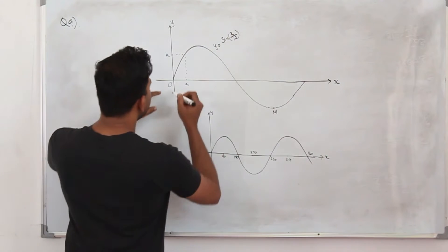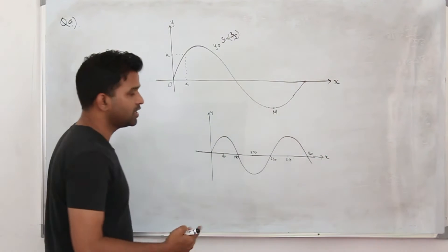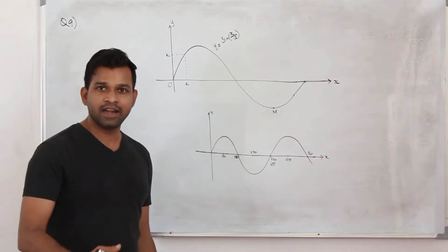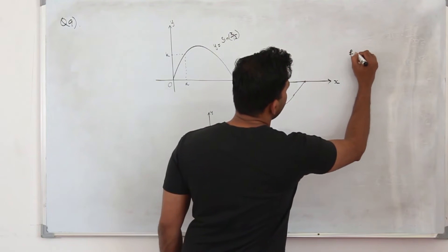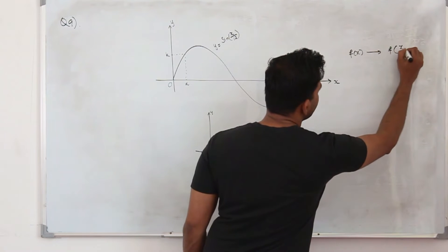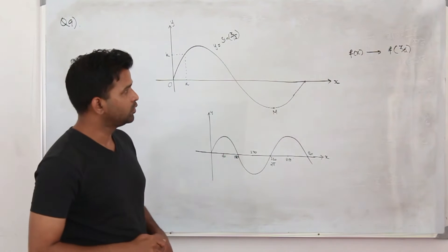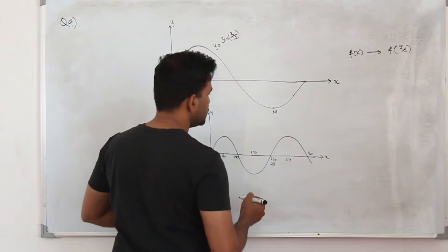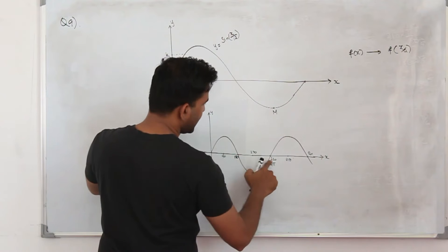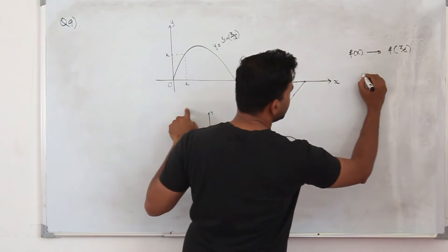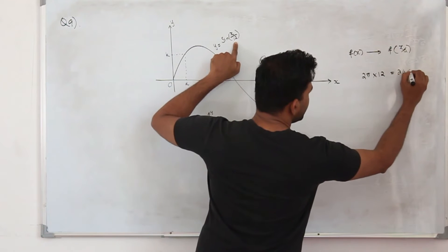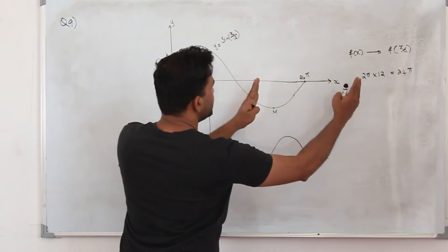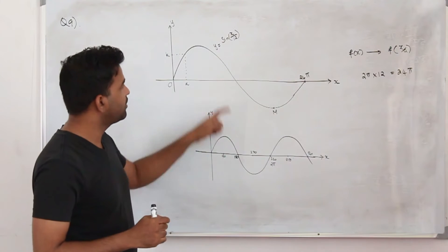Now for sin(x/12), we apply the transformation f(x/a). We learned in chapter 2 that when you apply f(x/a), the y-coordinates are not affected, but the x-coordinates are multiplied by a. Here a is 12, so 2π is multiplied by 12 to give 24π. So the period of sin(x/12) is 24π.